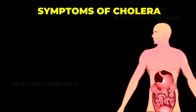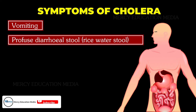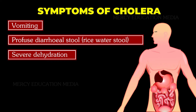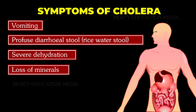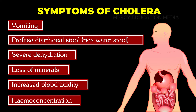What are the symptoms of cholera? They may be vomiting, profuse diarrheal stool i.e. rice water stool, severe dehydration, loss of minerals, increased blood acidity and hemoconcentration.